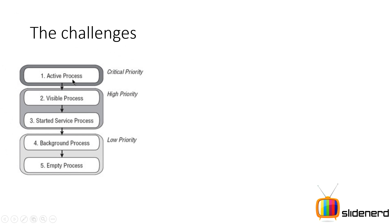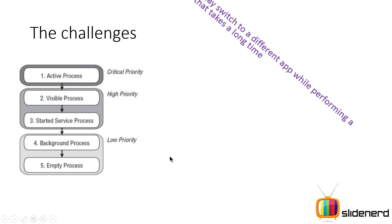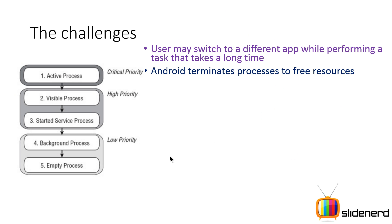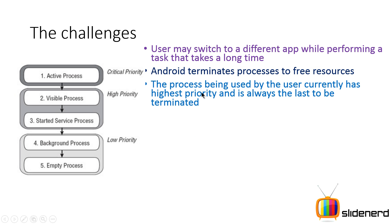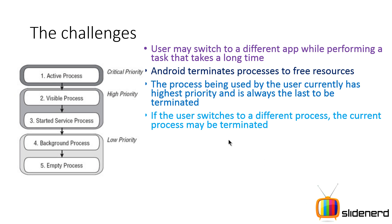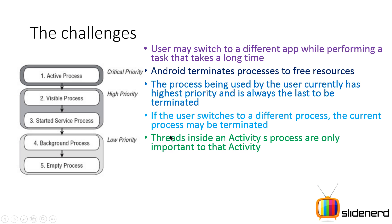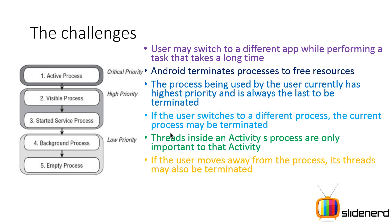There are different priority levels for processes in Android. When the user is working on something and switches to a different app, Android terminates processes to free resources. The app you're currently using has the highest priority and is always the last to be terminated when the system is low on RAM. If the user switches away, the current process may be terminated.